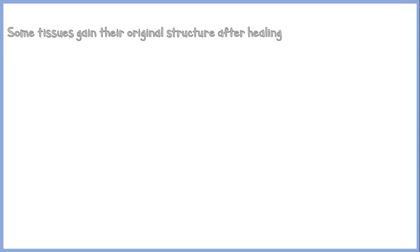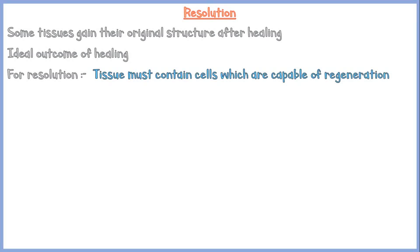Some tissues regain their original structure after healing. This is called resolution, and resolution is the ideal outcome of healing. However, for resolution to occur, the tissue must contain cells which are capable of regeneration, such as labile and stable cells, and the extracellular matrix framework of the tissue should be intact after the injury.